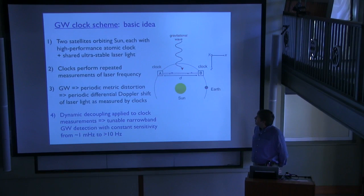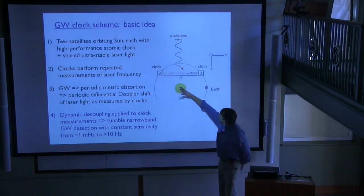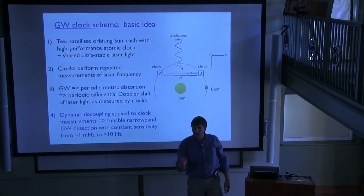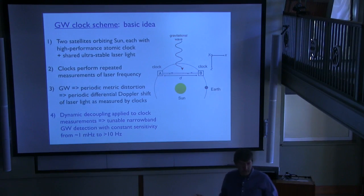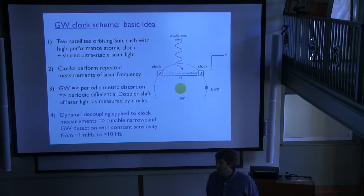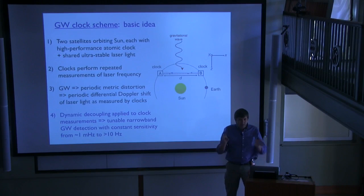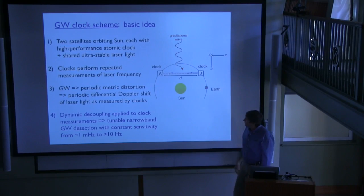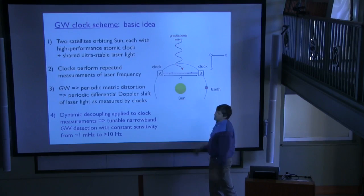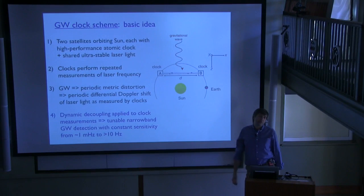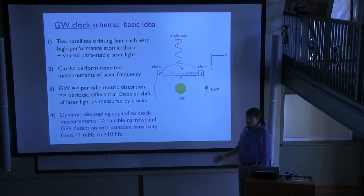So the basic idea, as you heard this morning, is to use two satellites, possibly more, orbiting the Sun on some large-length scales, maybe like 50 million kilometers, with high-performance atomic clocks on board as well as a shared ultra-stable laser, really two lasers but locked to each other, locked over timescales which are short compared to the timescale for the gravitational waves to pass. If you have a gravitational wave passing, perhaps plus polarized, it will lead to this periodic distortion of the metric and hence a differential Doppler shift of the light which would be sensed by the clocks.